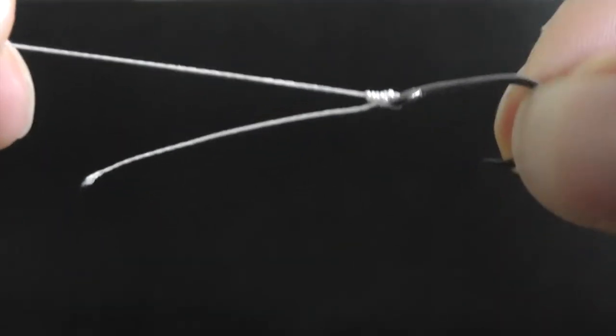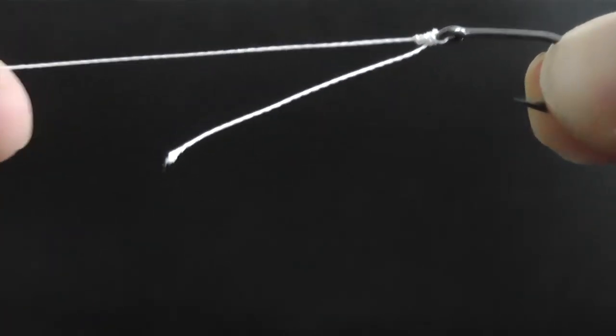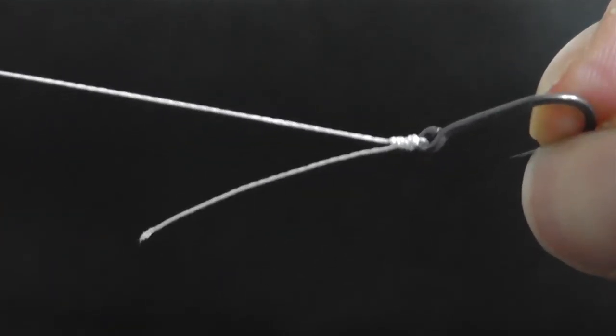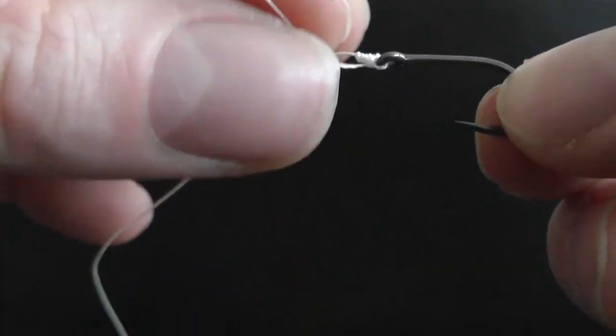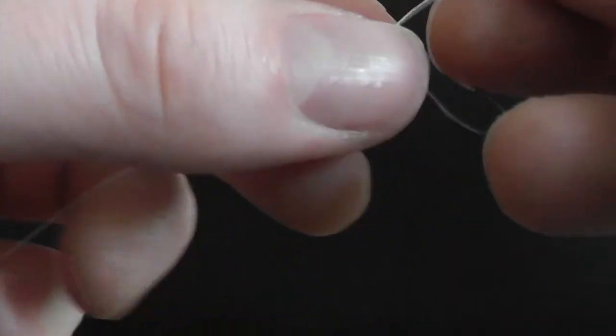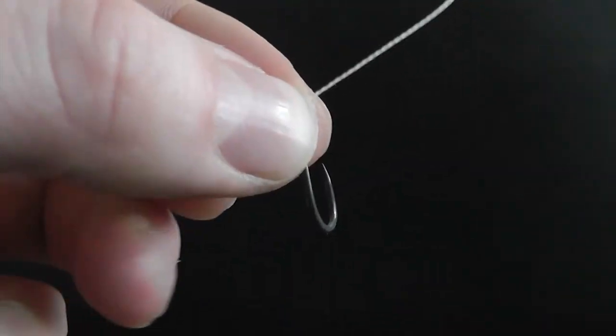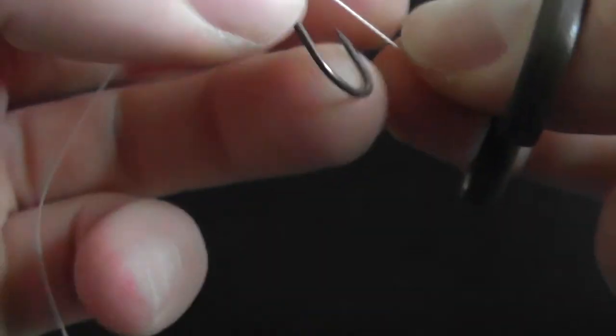See that we've got a nice, neat knot there with the line neatly butted up to the eye of the hook. Then all we do is nip off the tag end.